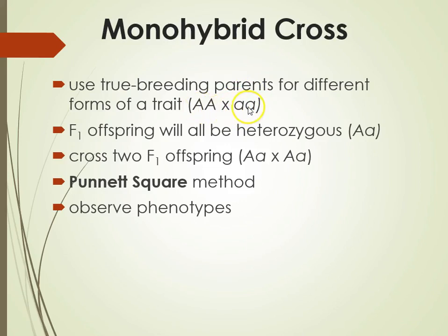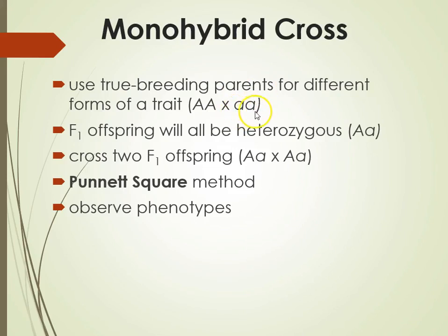So we start with true breeding parents. If we start with the homozygous dominant and homozygous recessive, we will always get the heterozygous condition in the F1 generation. If we have a homozygous dominant crossed with a homozygous recessive, the F1 generation will always give us 100% heterozygous, because this parent only has the dominant trait to pass on and this parent only has the recessive trait to pass on.